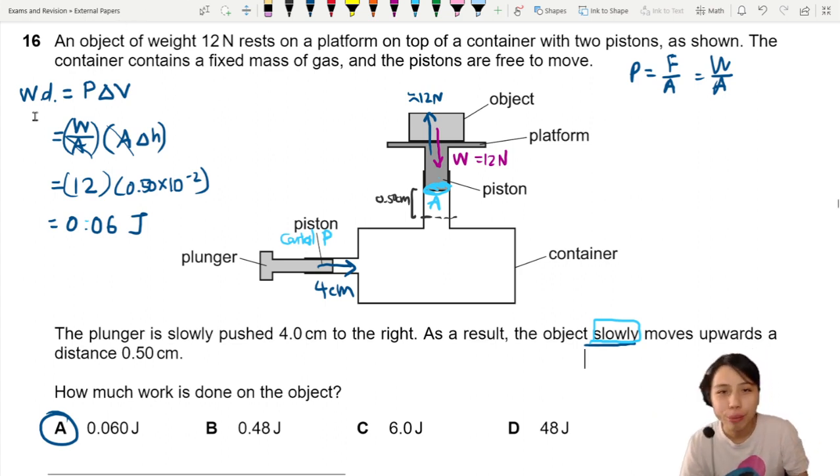But for now we'll stick to our W equals P delta V and also our P equals force per unit area. So that's all for this video. See you in the next one.